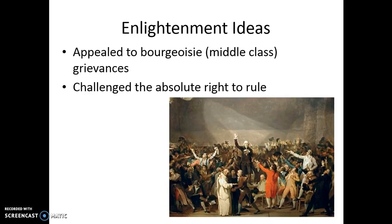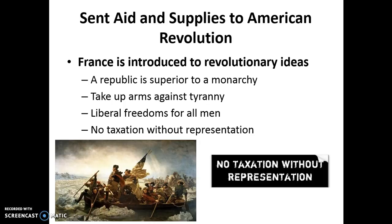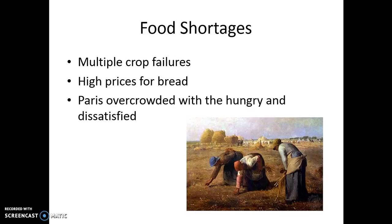Enlightenment ideas also caused the French Revolution. They were very appealing to the middle class — the bourgeoisie — who particularly liked the idea of challenging the king's absolute power. The American Revolution is another cause, introducing France to the idea that a republic is superior to a monarchy, that it is acceptable to take up arms against a tyrant, and that civil freedoms for all men should be guaranteed. They also liked the idea of no taxation without representation. On top of all this, multiple crop failures resulted in high bread prices, and Paris became overcrowded with hungry and dissatisfied people.